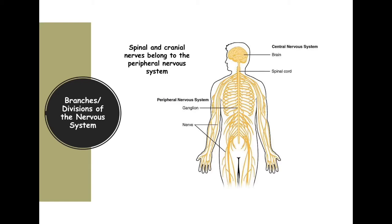You keep hearing us say central nervous system and peripheral nervous system. There are two general branches of the nervous system. The first is the central nervous system, which consists of the brain and the spinal cord — it's more central, that's a good way to remember it. Everything else outside of that is considered peripheral. The peripheral can consist of other types of nerves like the cranial nerves and the spinal nerves. There's another term called ganglia.